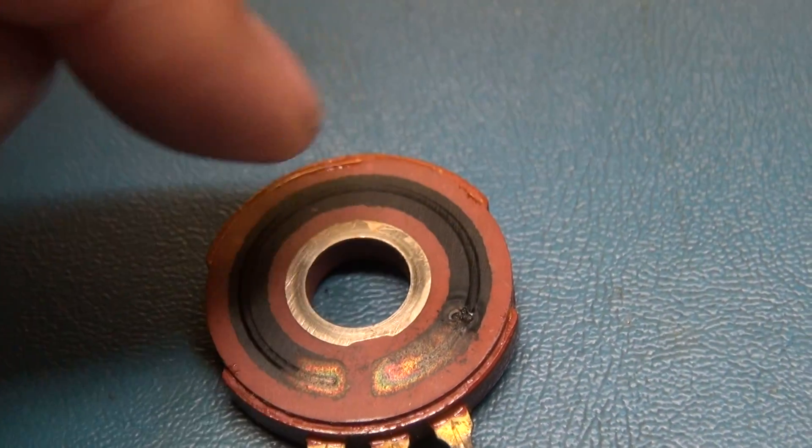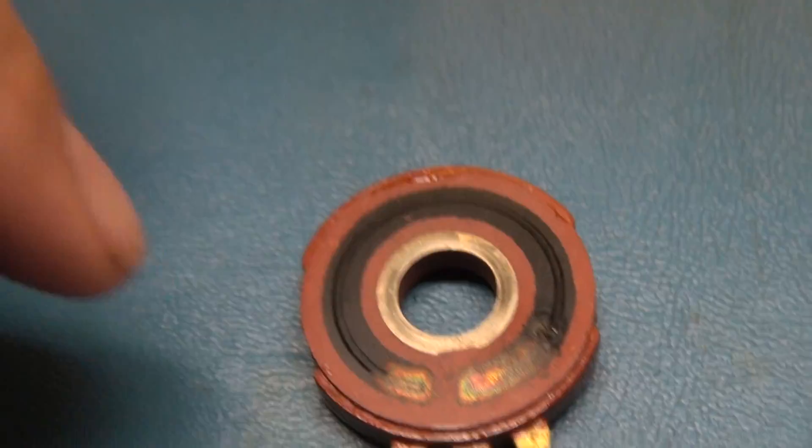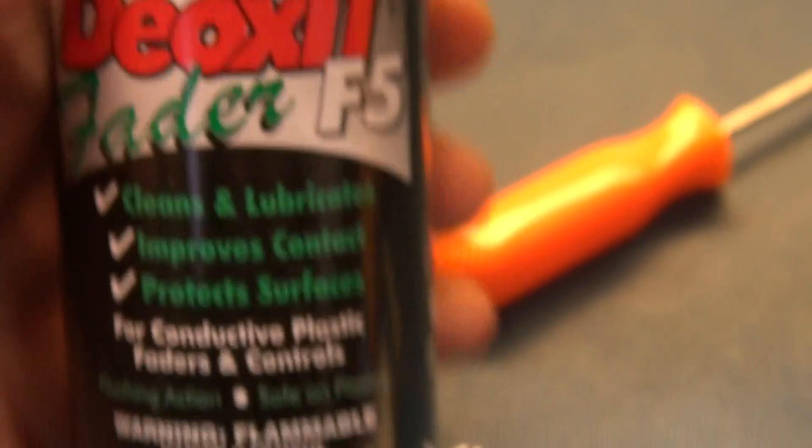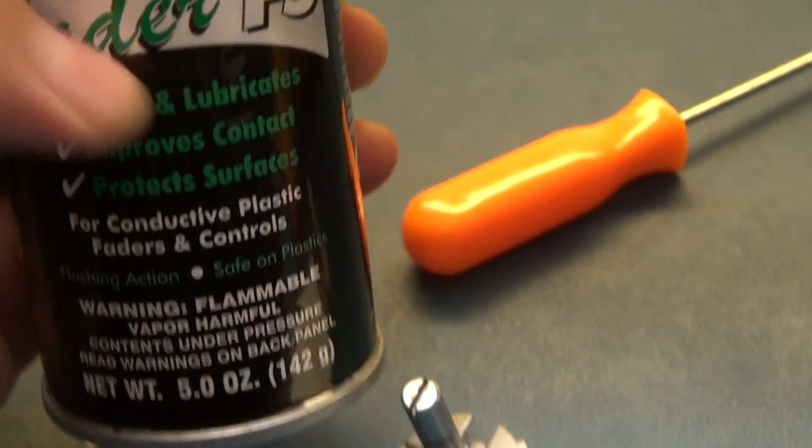If it's just scratchy and needs some lubrication, I don't suggest using contact cleaner because that's a temporary solution. You want to use something with a mild lubricant. I use this stuff - deoxid fader F5. It cleans and lubricates, so it's going to clean all this oxidation and crud that gets built up.